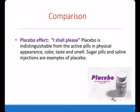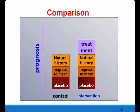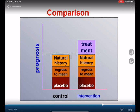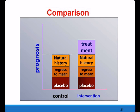The placebo effect — meaning 'I shall please' — refers to the response to an inert treatment indistinguishable from the active treatment in physical appearance, color, taste, and smell. Sugar pills and saline injections are examples of placebos. The placebo may also affect results. When comparing the control and intervention groups, the placebo effect, regression to the mean, and natural history of the disease must all be taken into consideration. After accounting for these effects, we can determine whether the treatment effect actually influenced patient prognosis.